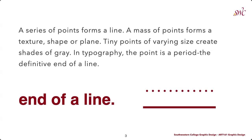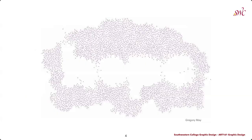When we think about a series of points, this is what forms a line. And a mass of points forms either a texture, potentially, or some sort of shape or plane. Tiny points of varying size create different shades of gray, such as in old newspapers and the way that we saw those images. In typography, the point of a period is the definition of the end of a line of text. There are many uses of different points within design.